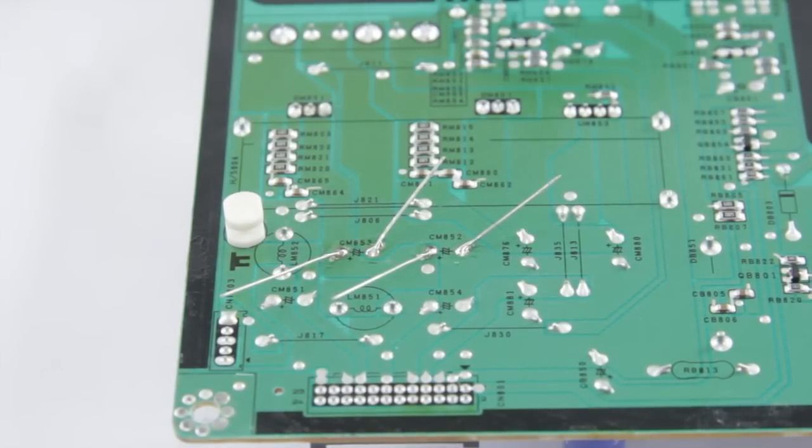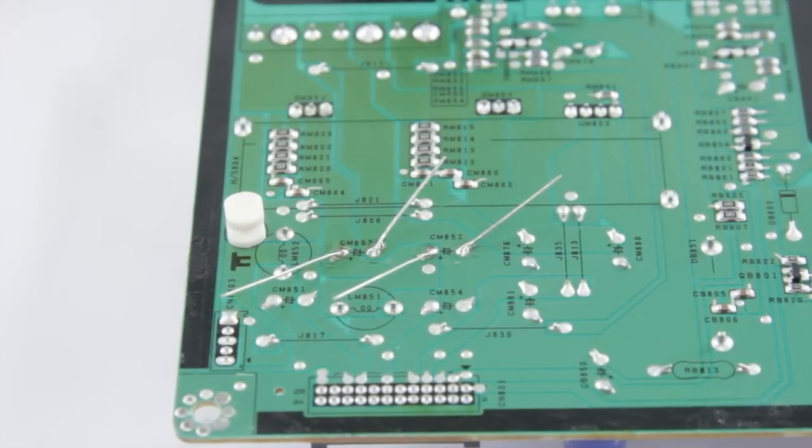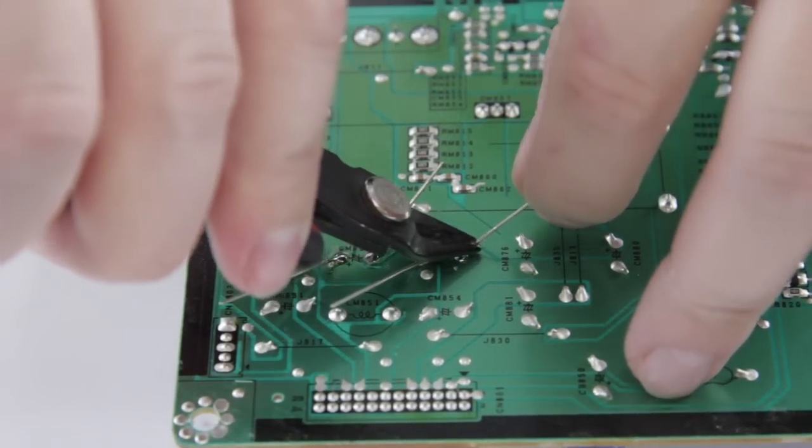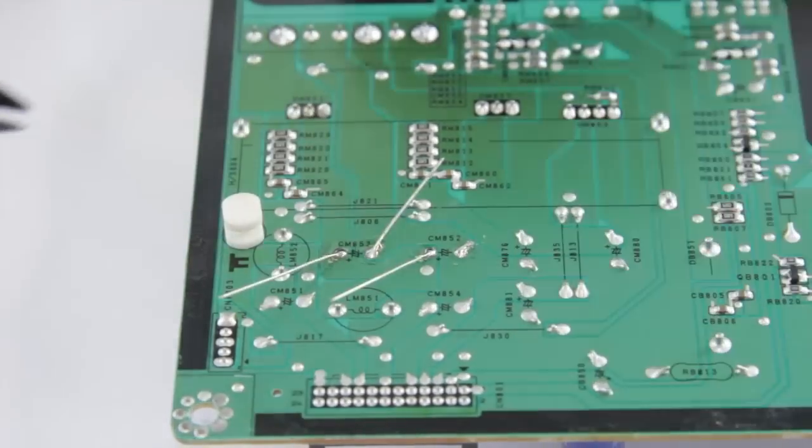Okay, so now we've got those soldered in place. We can go ahead and take our wire cutters and just snip them off.